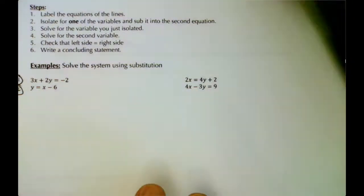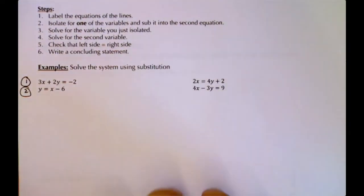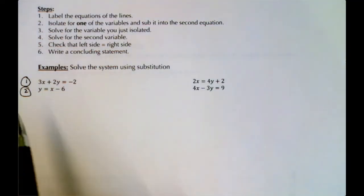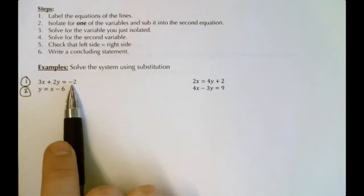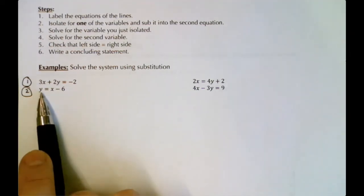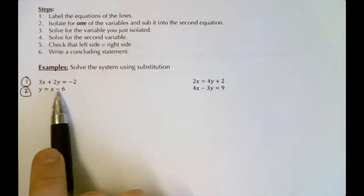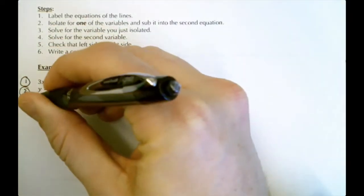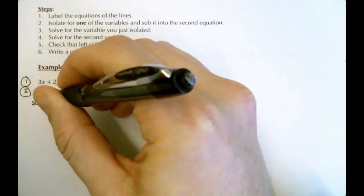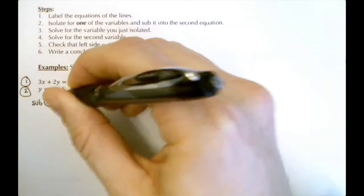Now that we have the equations labeled, we look at them and try to isolate one of the variables — that means making one equation say x equals or y equals. Equation 1 says 3x + 2y = -2, so it doesn't have x equals or y equals. But equation 2 already says y = x - 6, so we're done with that part of step 2.